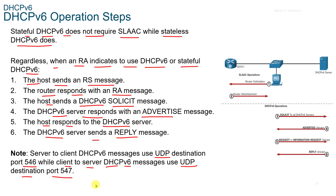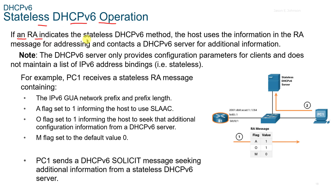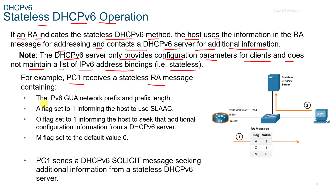The stateless DHCPv6 operation: if an RA indicates the stateless V6 method, the host uses the information in the RA for addressing and contacts a V6 server for additional information. The V6 server only provides configuration parameters for clients and does not maintain a list of IPv6 address bindings. For example, PC1 receives a stateless RA message containing the GUA network prefix. The A flag is set to 1 informing the host to use SLAAC, the O flag is set to 1 informing the host to seek additional configuration information, and the M flag is set to the default value of 0. PC1 then sends a V6 Solicit message seeking additional information from a stateless DHCPv6 server.